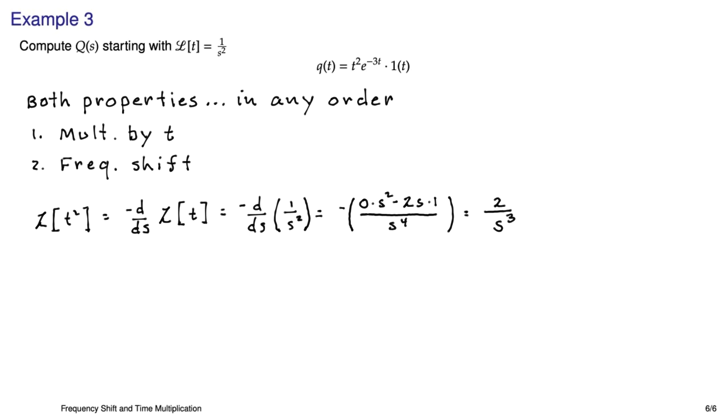Do the quotient rule again and simplify, and we get 2 over s³, which is probably exactly what you knew it to be. You could find this in almost every Laplace transform table. And now we can do the frequency shift. And it's as straightforward as replacing s with s+3 based on our e^(-3t). Voila!